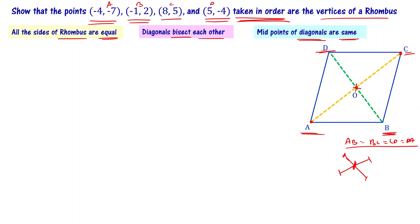So given the coordinates A, B, C, D, we have to show that all the sides are equal: AB equals BC equals CD equals DA. After that, we have to show that the diagonals bisect each other — meaning the midpoints of the diagonals are the same. This is how we are going to prove that the given points are the vertices of a rhombus.